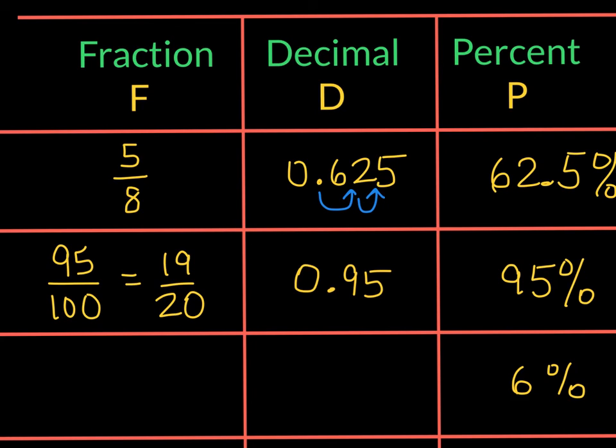And in the last row, we have 6%. We're going to move the decimal point two times to the left, and we will get 0.06 as a decimal, and this is 6 hundredths. To reduce this, we will divide numerator and denominator by 2, and we will get 3 over 50.